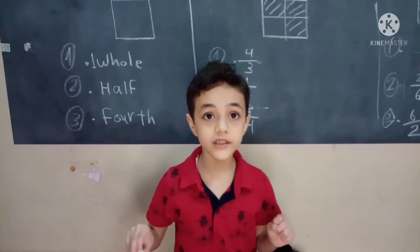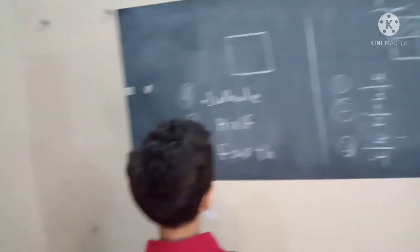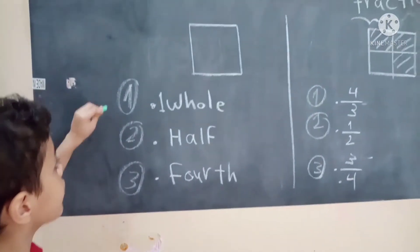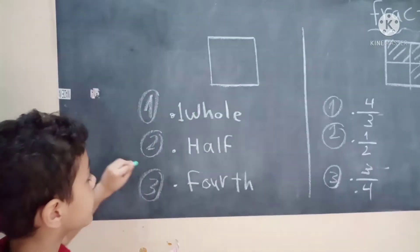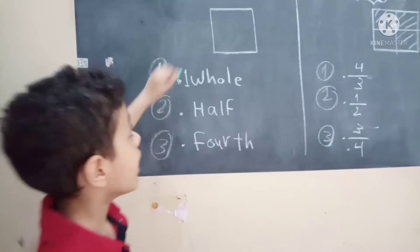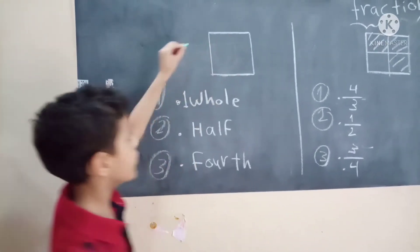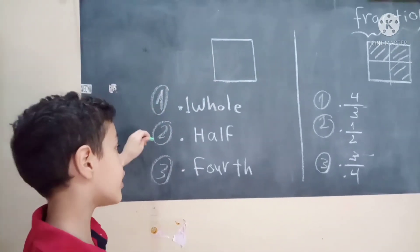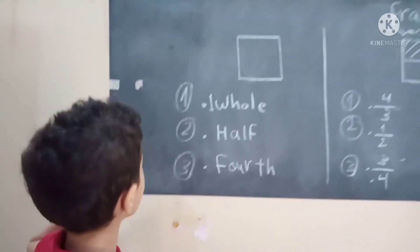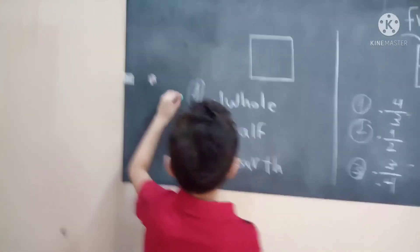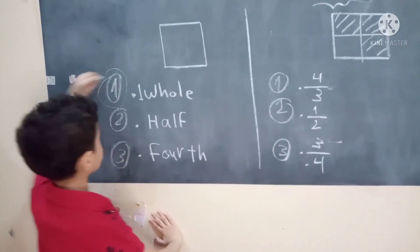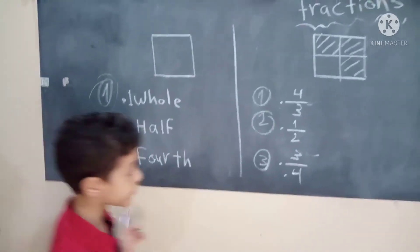Pop quiz. So this is the first one. What do you think? Is it one or two or three? One is one whole. This is half. This is fourth. So this picture, is it one whole or one half or one fourth? You are right. It's one whole.